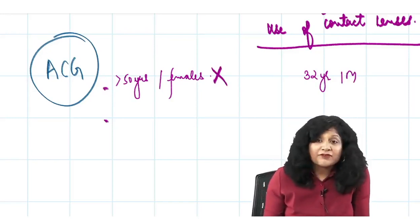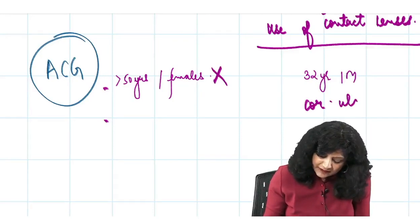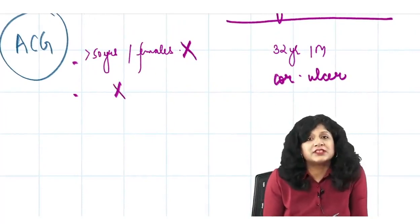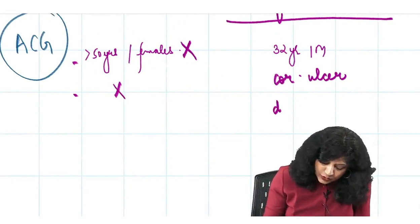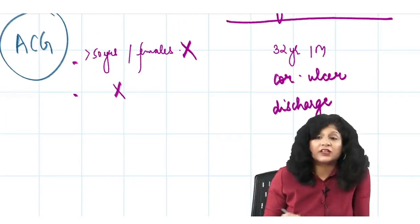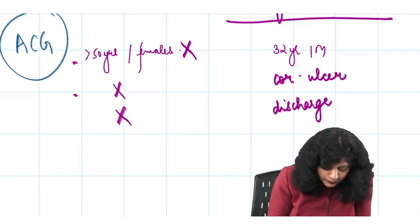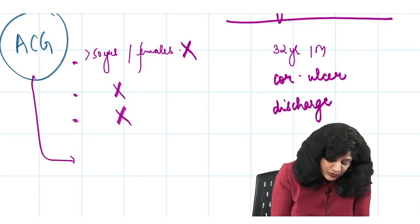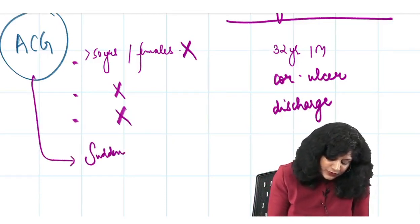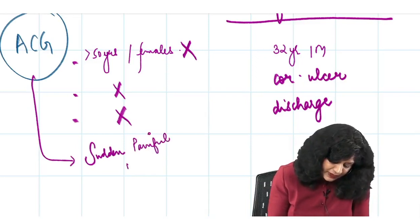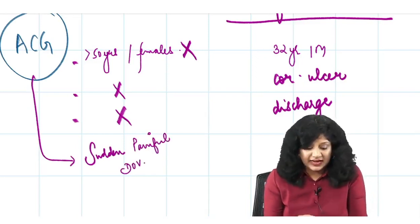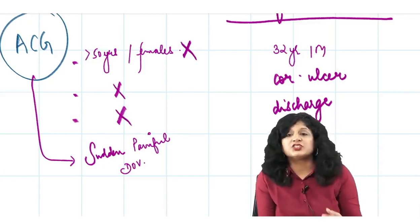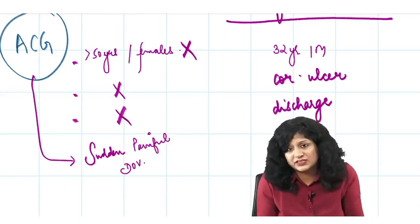Second, they have given you a corneal ulcer — you are not going to get a corneal ulcer in acute congestive glaucoma. They have also given you discharge — you would not get discharge in acute congestive glaucoma. So though this condition can lead to sudden painful diminution of vision, the age, gender, corneal ulcer, and discharge all go against acute congestive glaucoma.